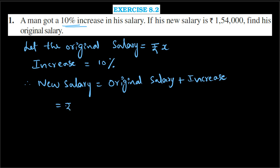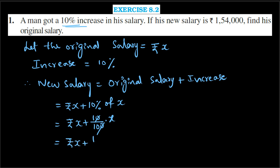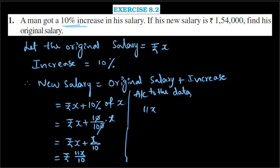New salary equals original salary Rs. X plus increase of 10% of the original salary X. This can be written as X plus 10/100 times X. Cancelling zeros, this becomes X plus X/10, which equals 11X/10 rupees. According to the problem, this equals Rs. 1,54,000.